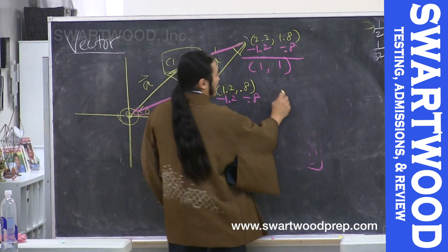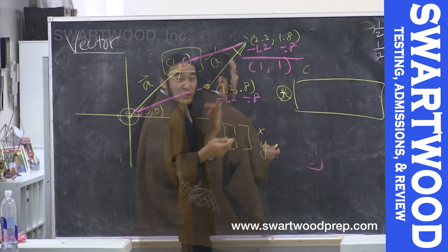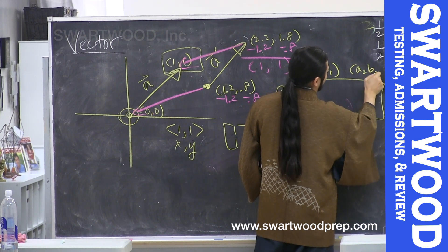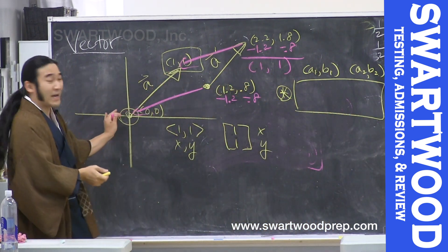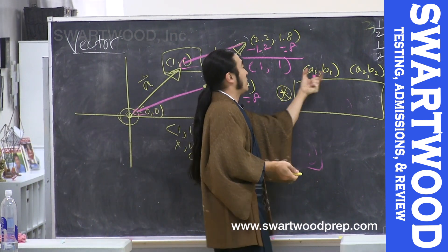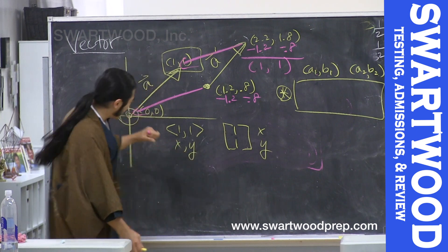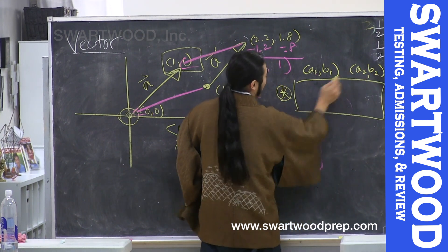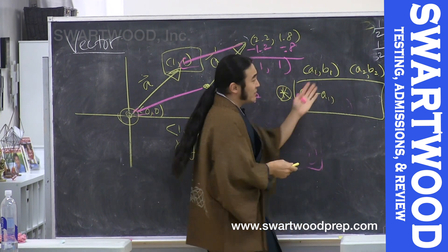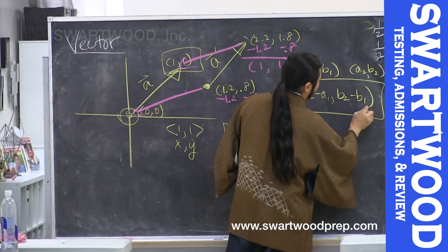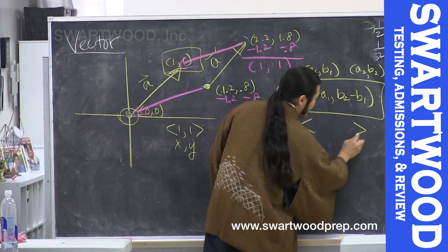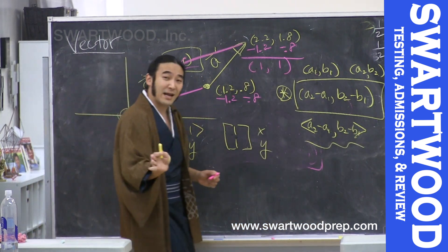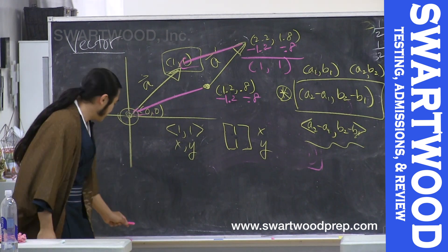For a general formula, if the tail is at (a1, b1) and the head is at (a2, b2), to bring it to the origin you subtract a1 and b1 from the tail — that drags it to the origin. For the tip, you subtract a1 from the x-coordinate and b1 from the y-coordinate, giving (a2 - a1, b2 - b1). With this single set of coordinates we can describe that same vector. We'll take it for granted that this notation is in play unless otherwise specified.